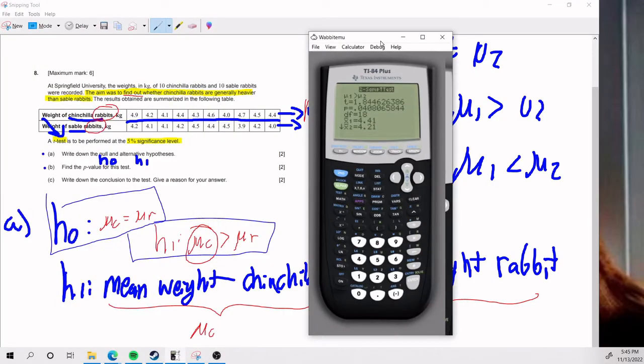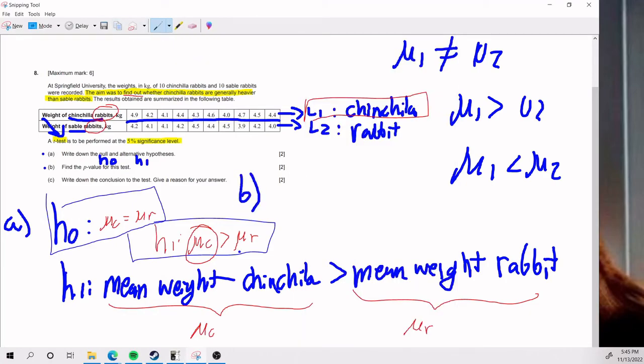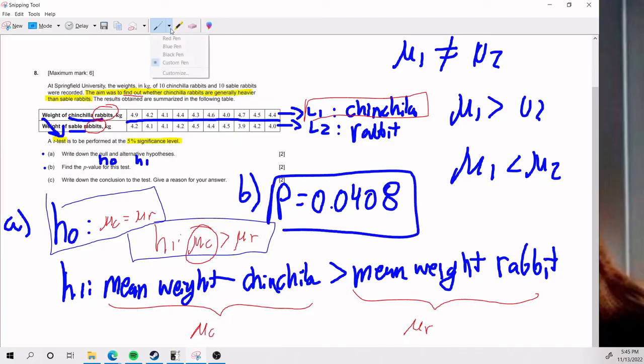And so for part B, that's literally all you have to do. Part B, you put it all into your calculator and you say that your p-value is 0.0408. If you're worried about showing your process, you literally have to say, this is L1, this is L2, stat, test, two-sample t-test. So if you write that out, that counts as showing your work. Anyways, that is for part B.